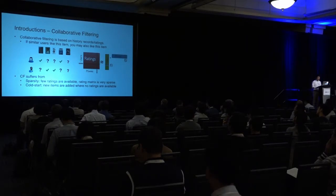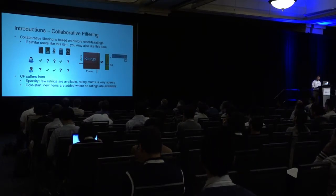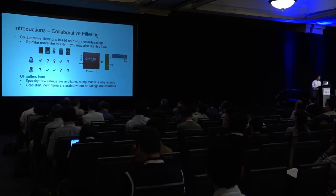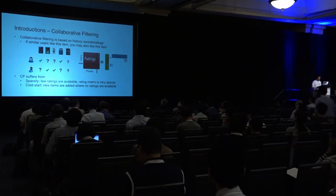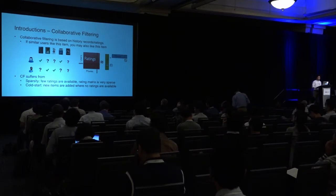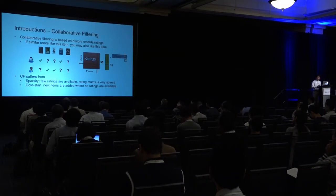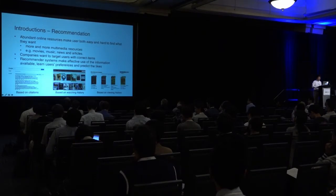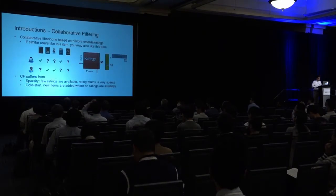The sparsity problem is when you have only a few ratings available and the rating matrix is very sparse. In this case, collaborative filtering performs very poorly or even fails. The cold start problem is when new items come in and no user has rated them yet, so you have no ratings to do collaborative filtering.